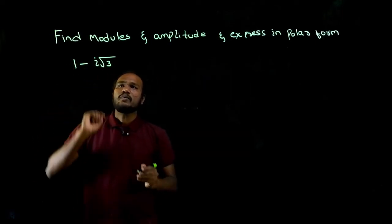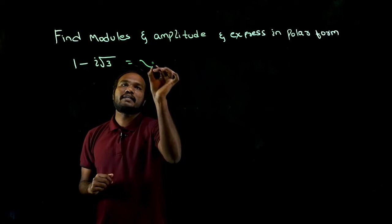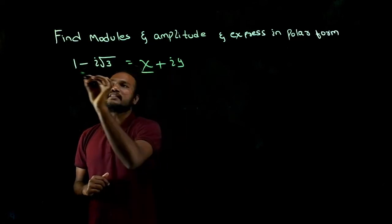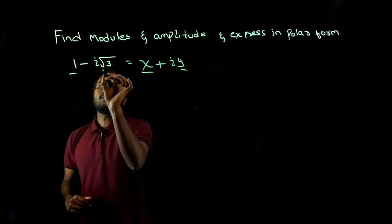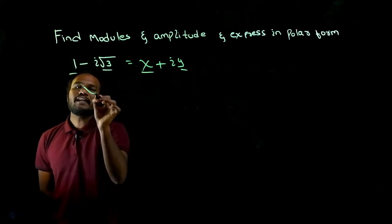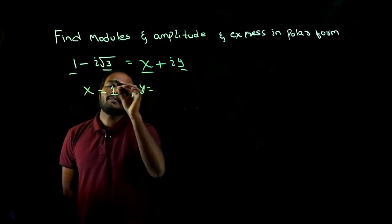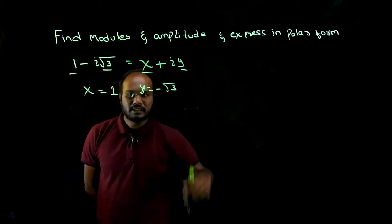This is the value of what is given as z, so we need to compare this with x plus i y. I have to compare this to this, this to this. So what will be the value of x? x value will be 1. What is the value of y? y value will be equal to minus root 3.